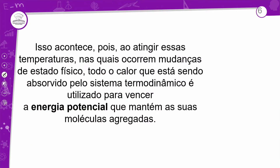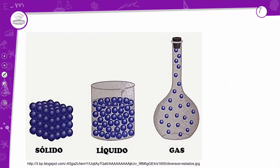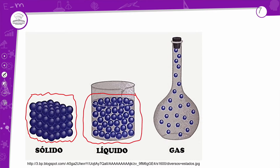Dois exemplos: fusão e ebulição da água. Isso acontece pois, ao atingir essas temperaturas nas quais ocorrem mudanças de estado físico, todo o calor que está sendo absorvido pelo sistema termodinâmico é utilizado para vencer a energia potencial que mantém suas moléculas agregadas. No estado sólido, há uma organização entre as partículas bem definida — a coisa é bem forte. Para quebrar isso, é necessária bastante energia, muito mais do que no calor sensível.